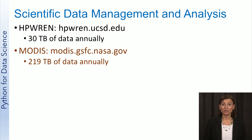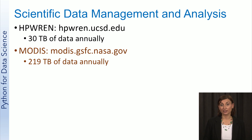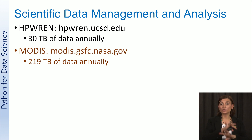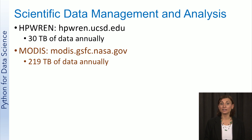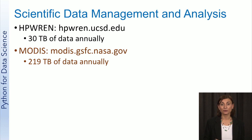NASA's MODIS, or Moderate Resolution Imaging Spectroradiometer, is a satellite that has imaging instruments on two satellites called Aqua and Terra. MODIS instruments on these satellites capture images of the entire surface of Earth every one to two days, acquiring data in 36 spectral bands. This equals 40 science products and produces 600 gigabytes of data per day, which equals 219 terabytes of data per year.